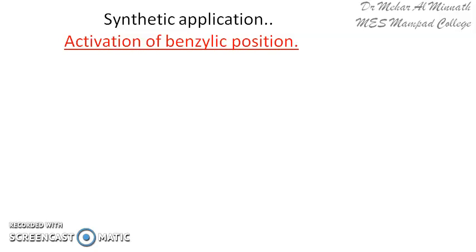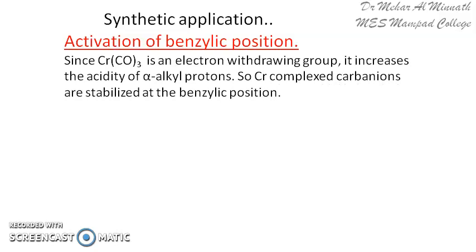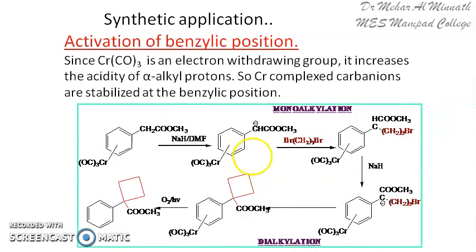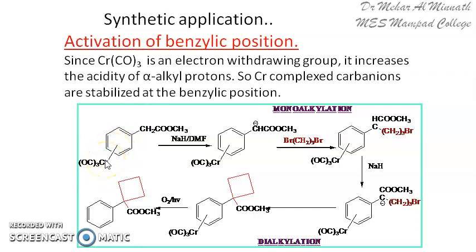Let us discuss first the activation of the benzylic position of the aryl compound. When the aryl compound is complexed with chromium tricarbonyl — which is an electron-withdrawing group — the acidity of the alpha alkyl proton increases, and hence they can be easily removed. The benzylic protons become highly acidic because of the presence of this electron-withdrawing chromium part.